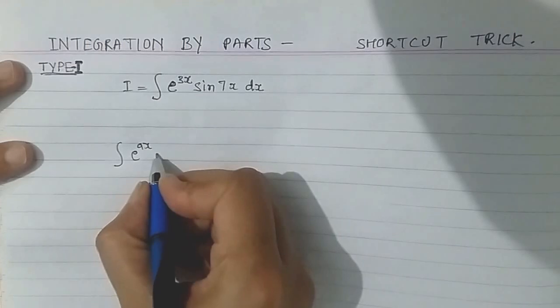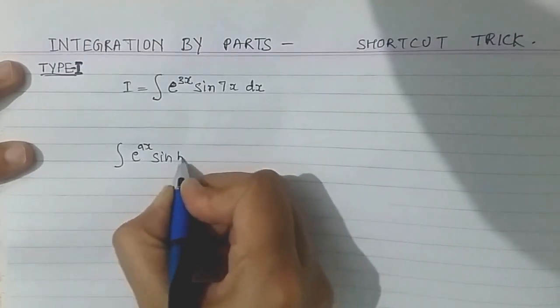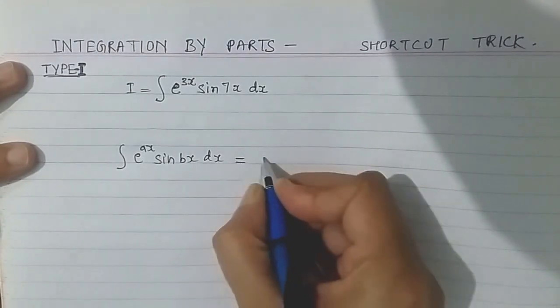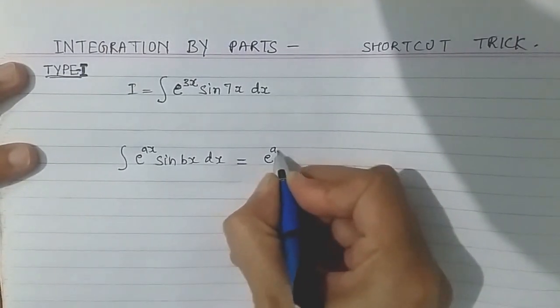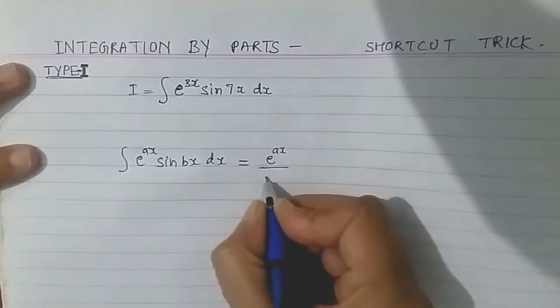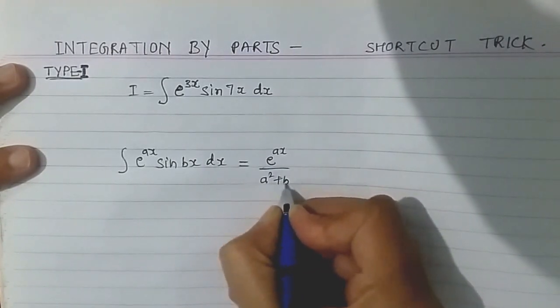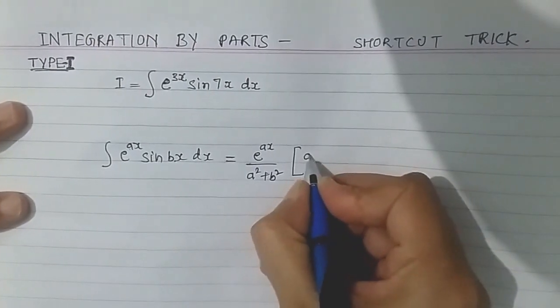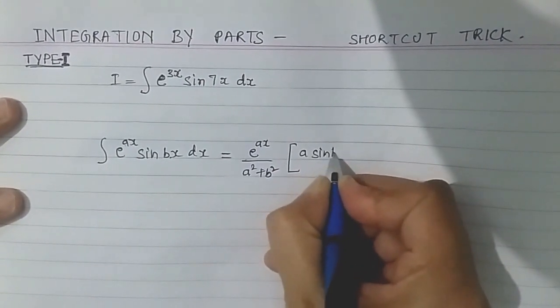For this I have a trick: e raised to the power ax divided by a squared plus b squared, these two constant terms. After that I will be writing a sine bx.